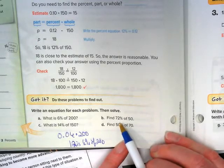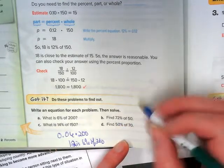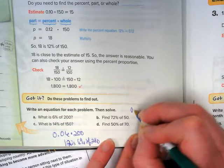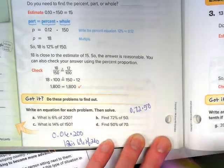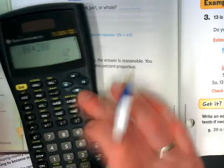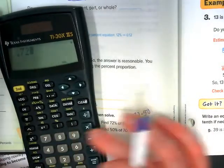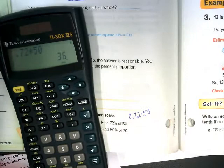If I want to find 72% of 50, I would do 0.72 times 50. And I get 36.